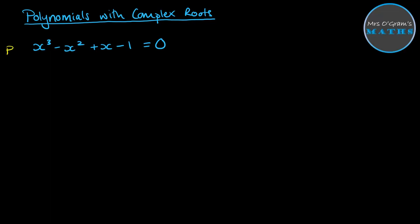So if we call this polynomial p(x), then we can try out factors that might go into it. So we're looking at factors of minus 1. Keeps things nice and easy because that's only 1 and minus 1.